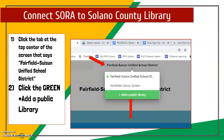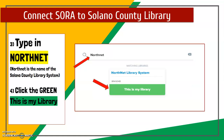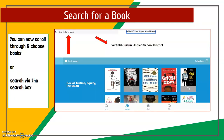Now we'll connect Sora to the Solano County Library. At the top center of the Explore page, click the tab that says 'Fairfield Suisun Unified School District,' then select 'Add a Public Library' from the drop-down menu. Type in 'Northnet' — that's the name of the Solano County Library system. Don't type Solano or Fairfield — type Northnet and click 'This is my library.' Now you're connected to both FSUSD and Solano County Library, and searches will return results from both.